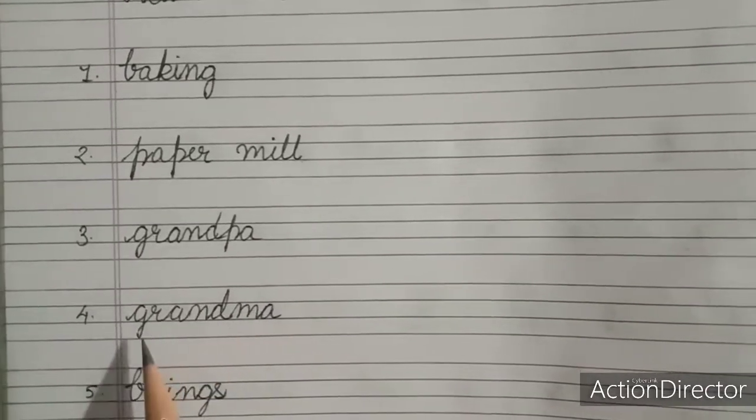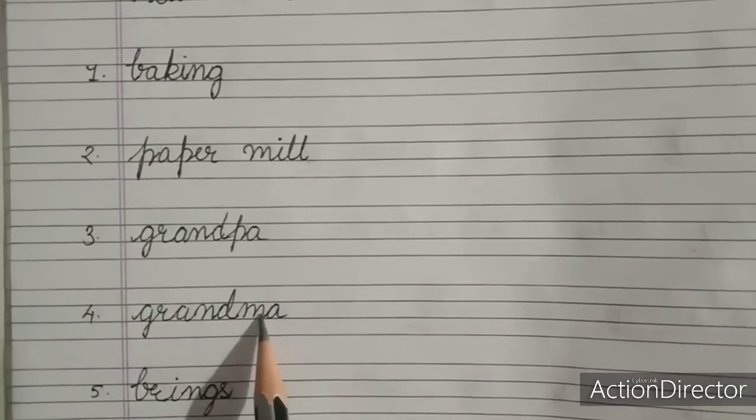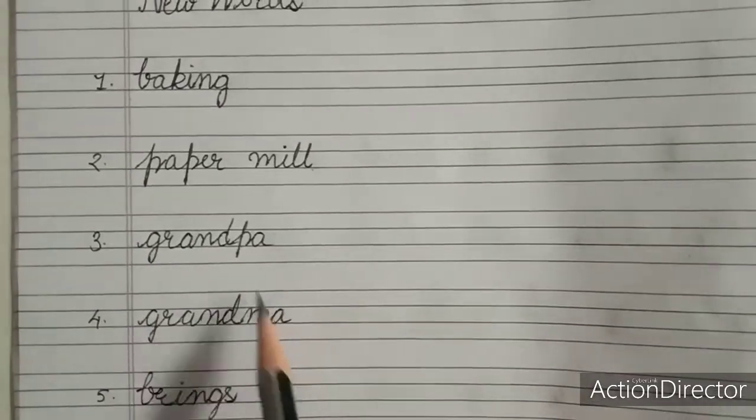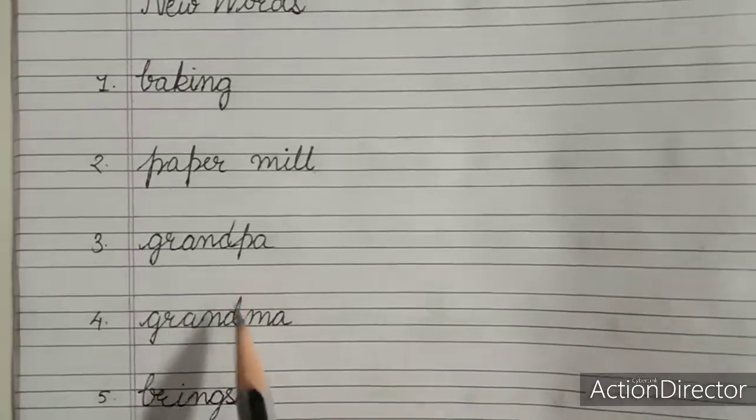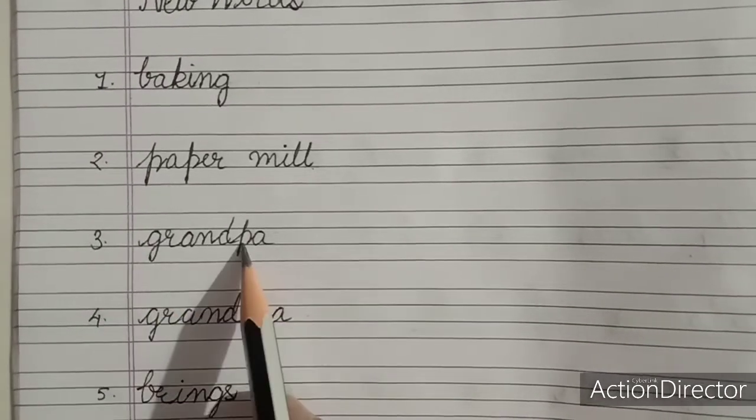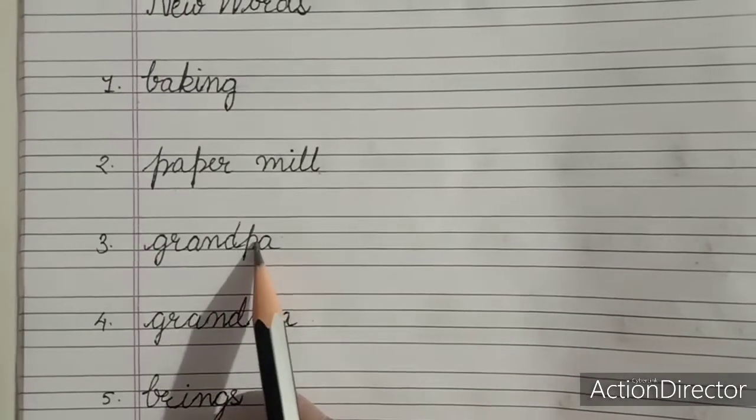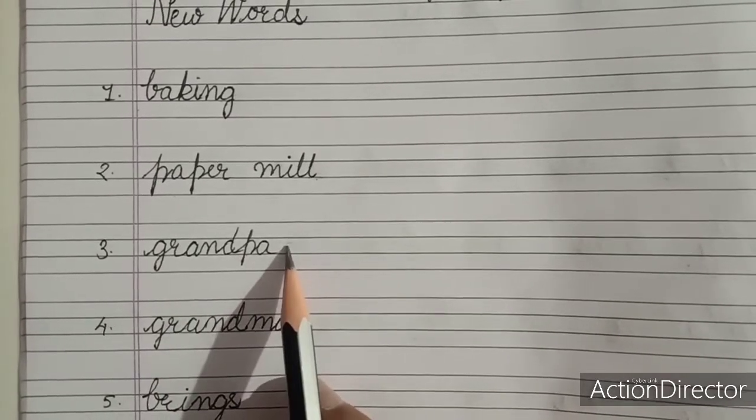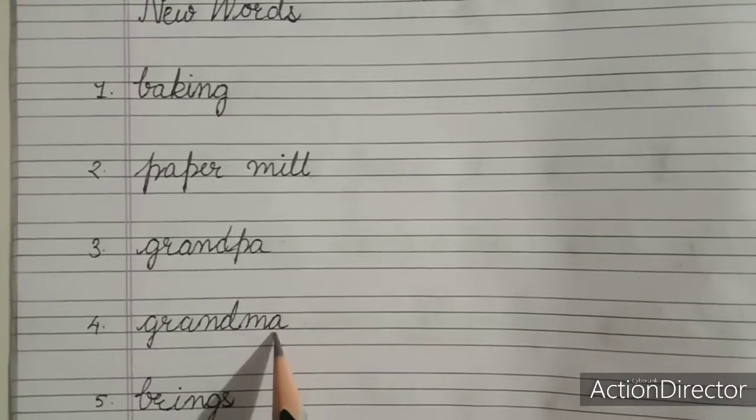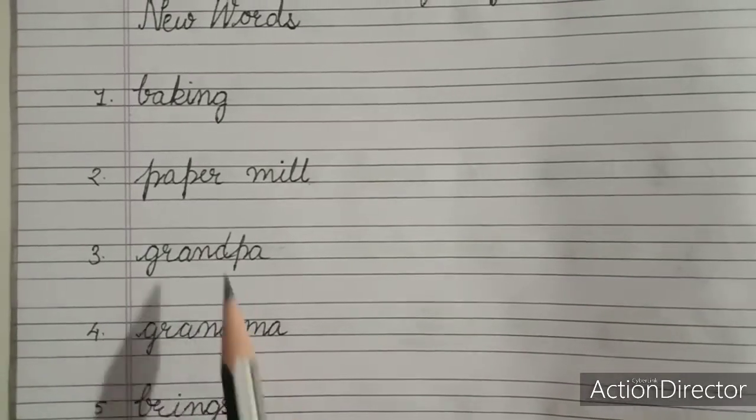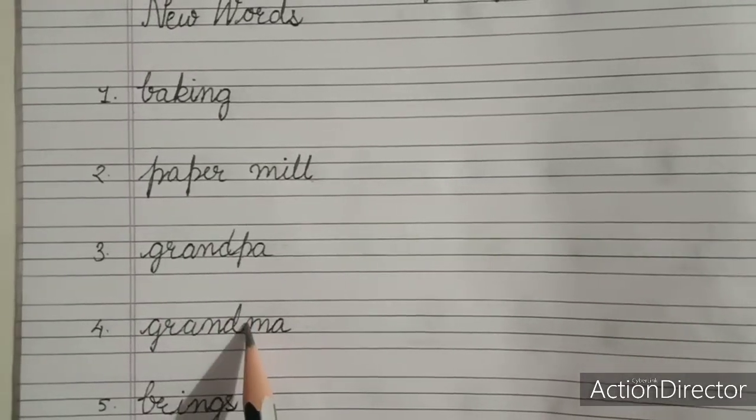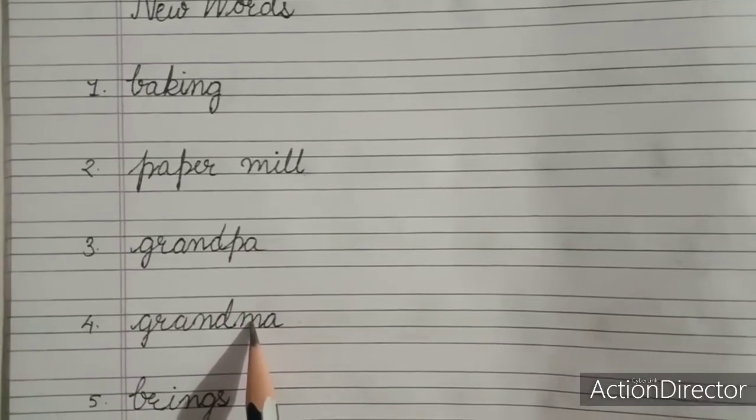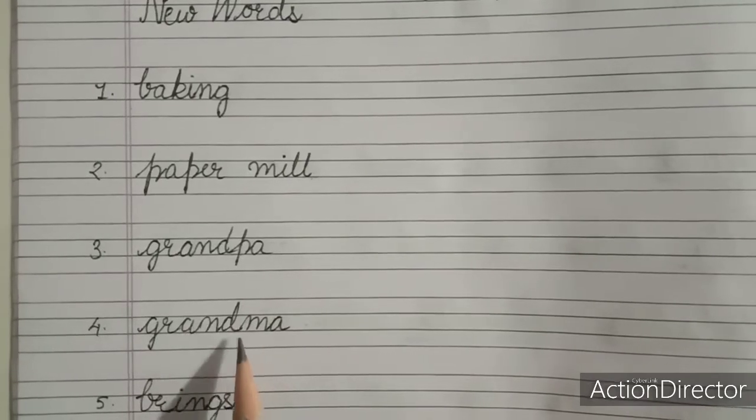Then grandma. G-R-A-N-D-M-A. Grandma. Now you can see there are some similar words in both the words. Similar letters in both the words. So grand and here also grand. You just have to add pa or ma. So grandpa will have P-A in the end. Grandma will have M-A in the end. The rest is as it is. So it will be easy for you to learn. So you can use this trick also. Grandma means grandmother.